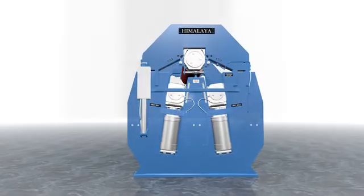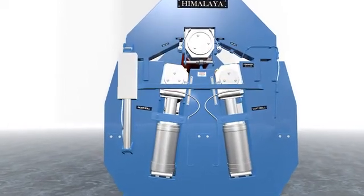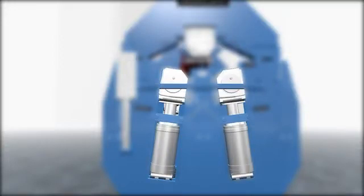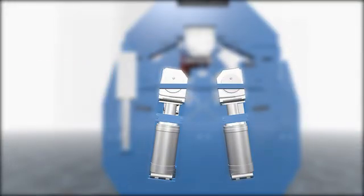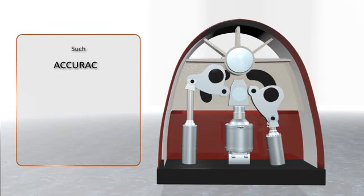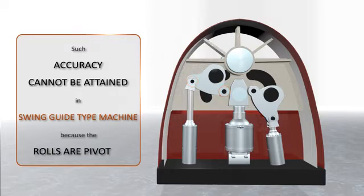In case of Linear Guide Way Type Machine, bottom rolls are positively guided in the machine frame. These frames prevent lateral movement of the bottom rolls under load conditions. This ensures better accuracy of the resultant job. Such accuracy cannot be attained in Swing Guide Type Machine because the rolls are pivoted and not positively guided.